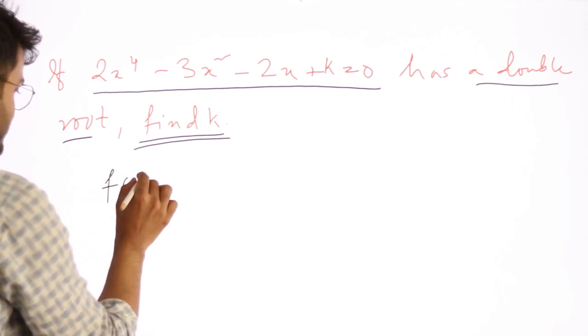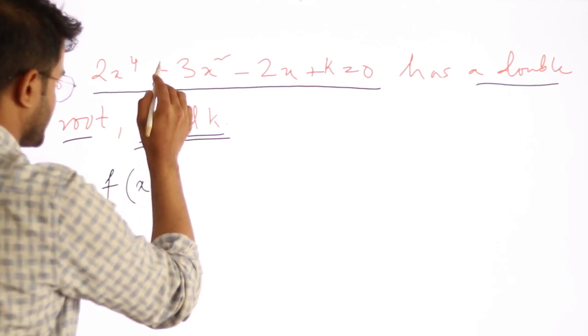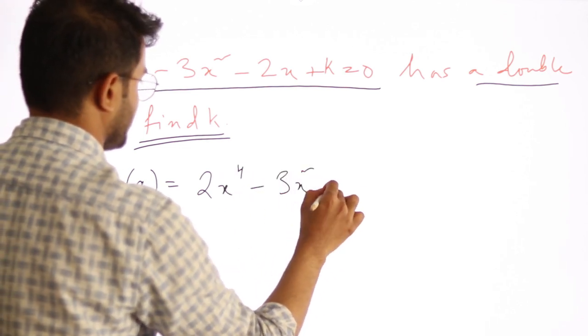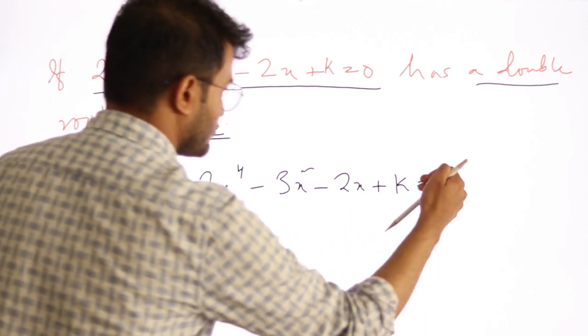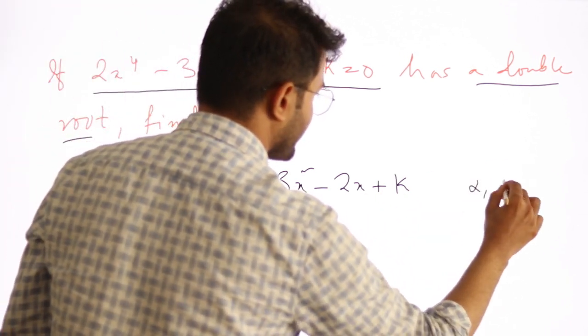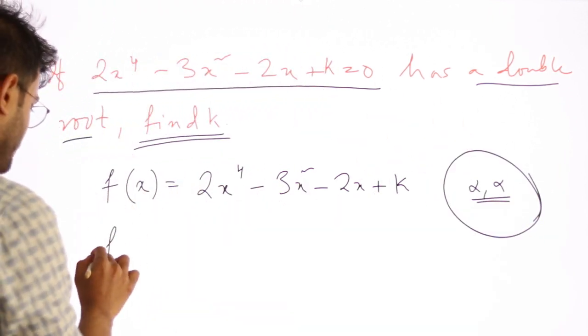The question is, what has been said? If we have 2x to the power 4 minus 3x to the power 4 minus 2x plus k equals 0, and its two roots are equal, call this f(x). And alpha and alpha are repeated roots. So if alpha, alpha are roots, then what can I say?